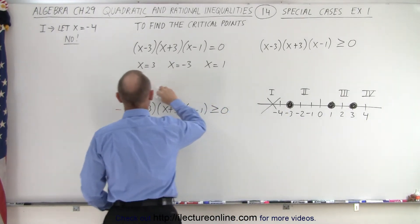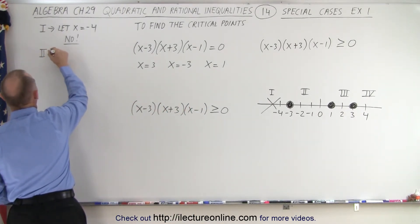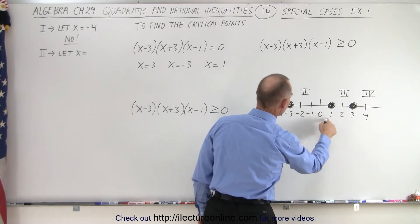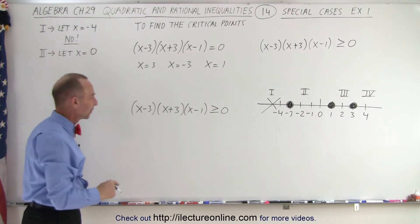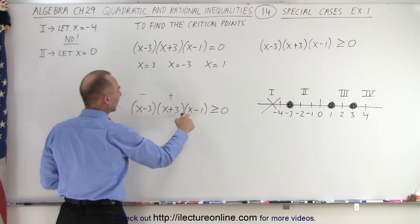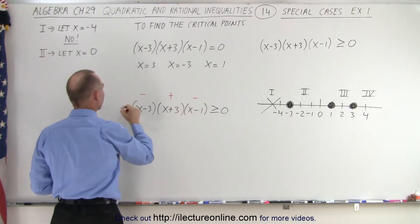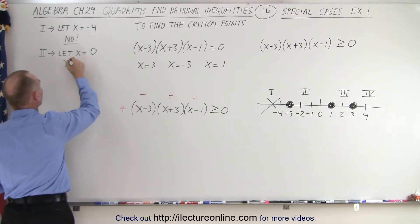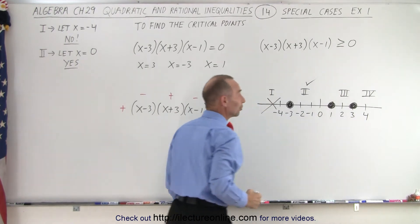For region 2, we let x equal 0, since 0 is between negative 3 and 1. If x equals 0: 0 minus 3 is negative, 0 plus 3 is positive, and 0 minus 1 is negative. A negative times a negative gives a positive, so the whole expression is positive. A positive expression is greater than zero, which means the numbers in region 2 do satisfy the inequality.